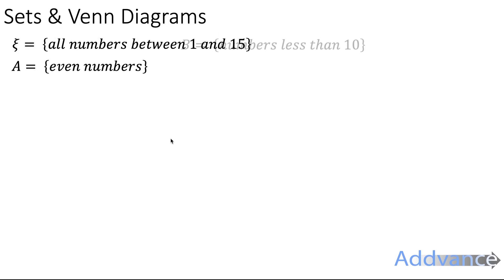I've got another example here for you to try. This is a bit like an exam. First we'll describe the universal set. When we talk about the universal set, it's the set of all the things we're interested in. The universal set is given by this fancy E symbol, and it's all numbers between 1 and 15. The set A are the even numbers, and the set B are the numbers less than 10.